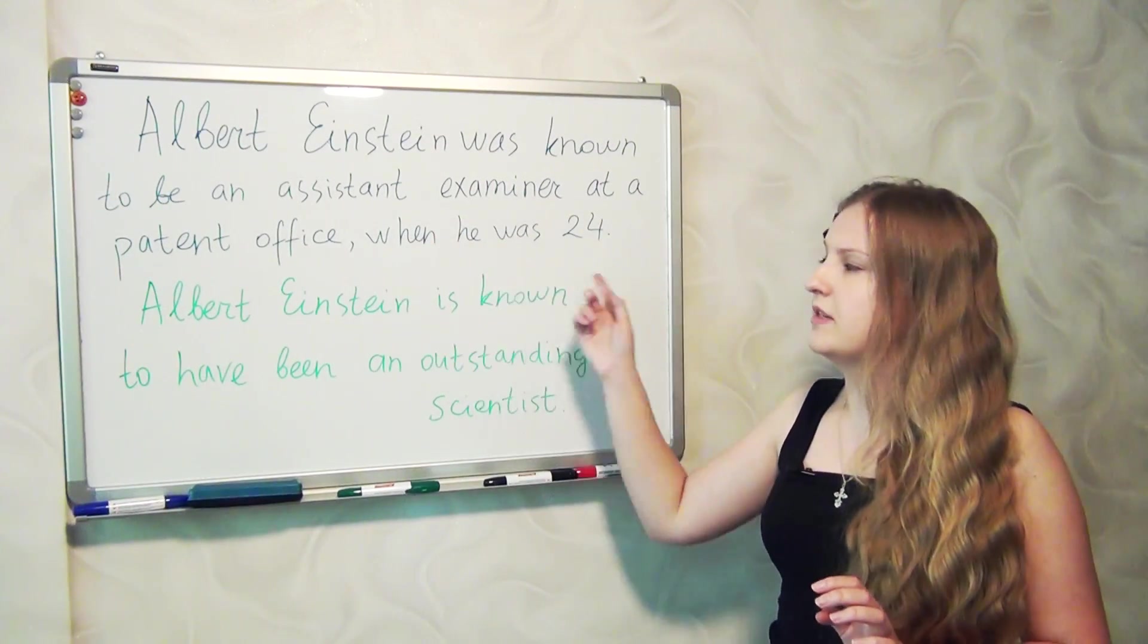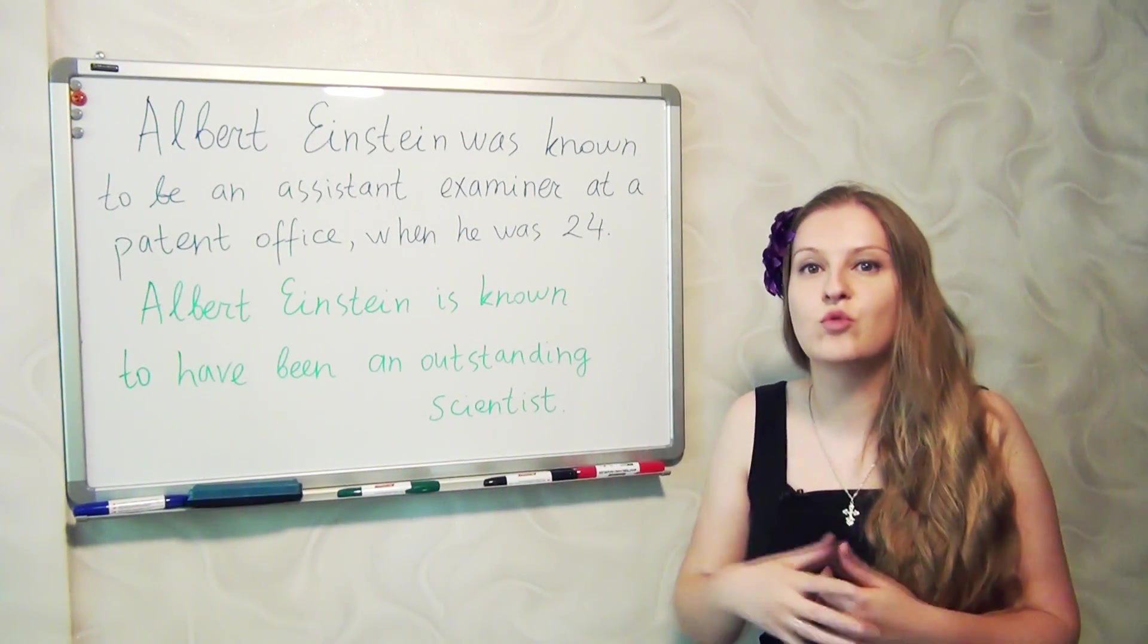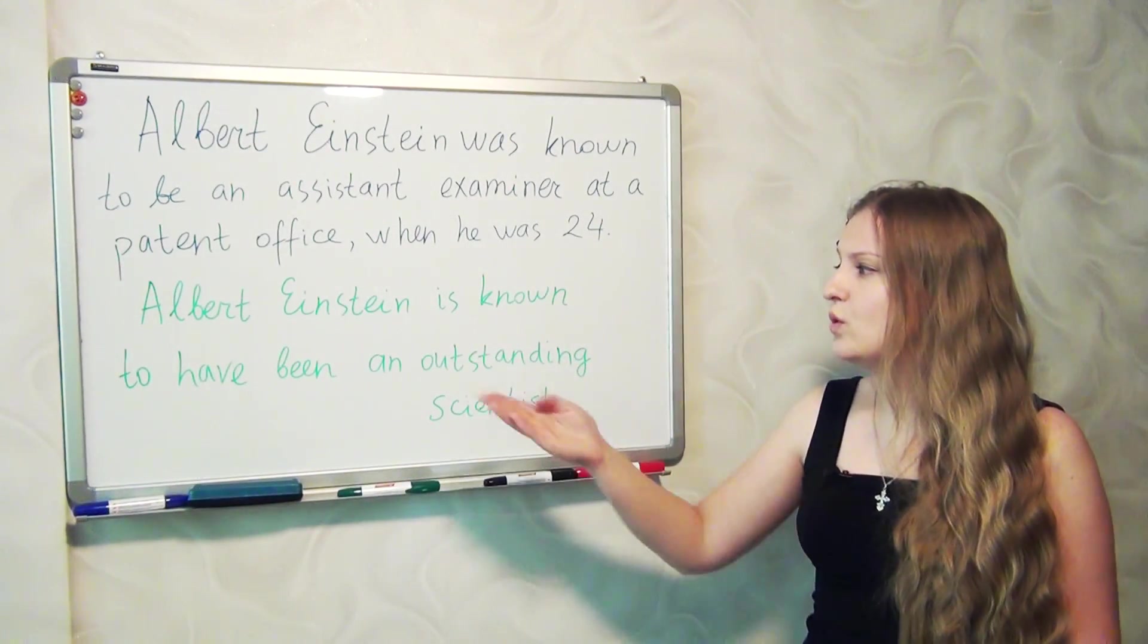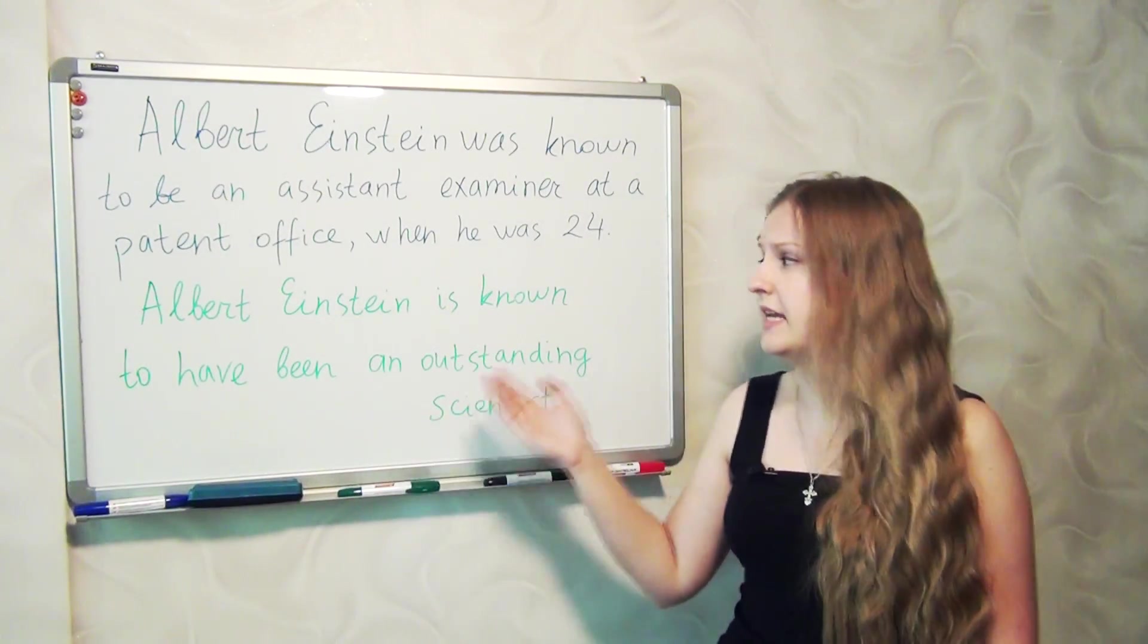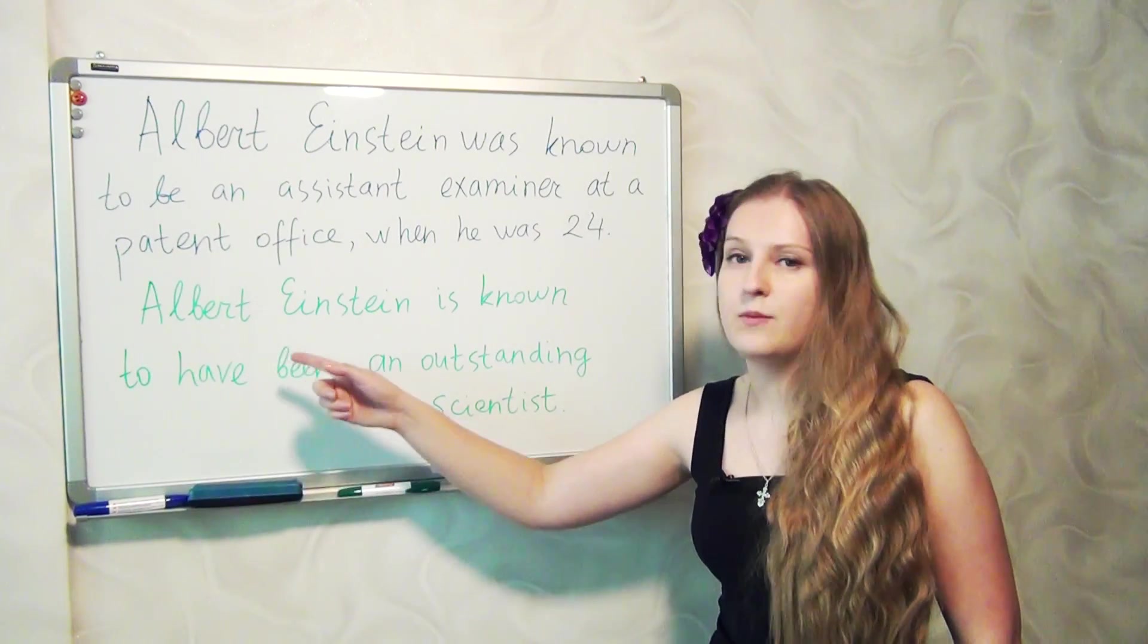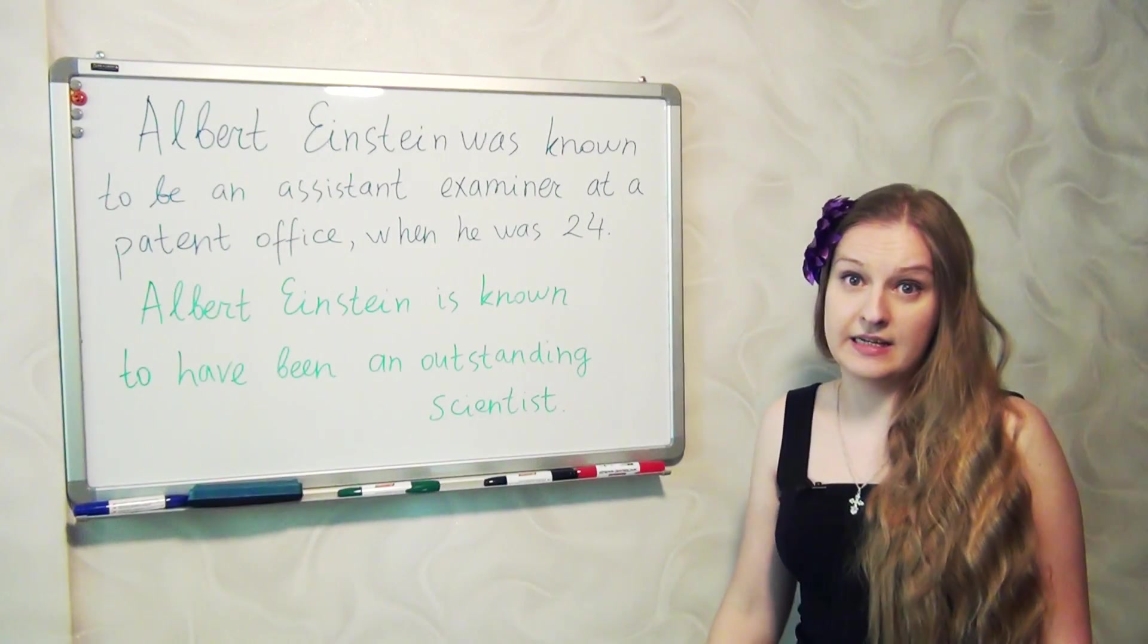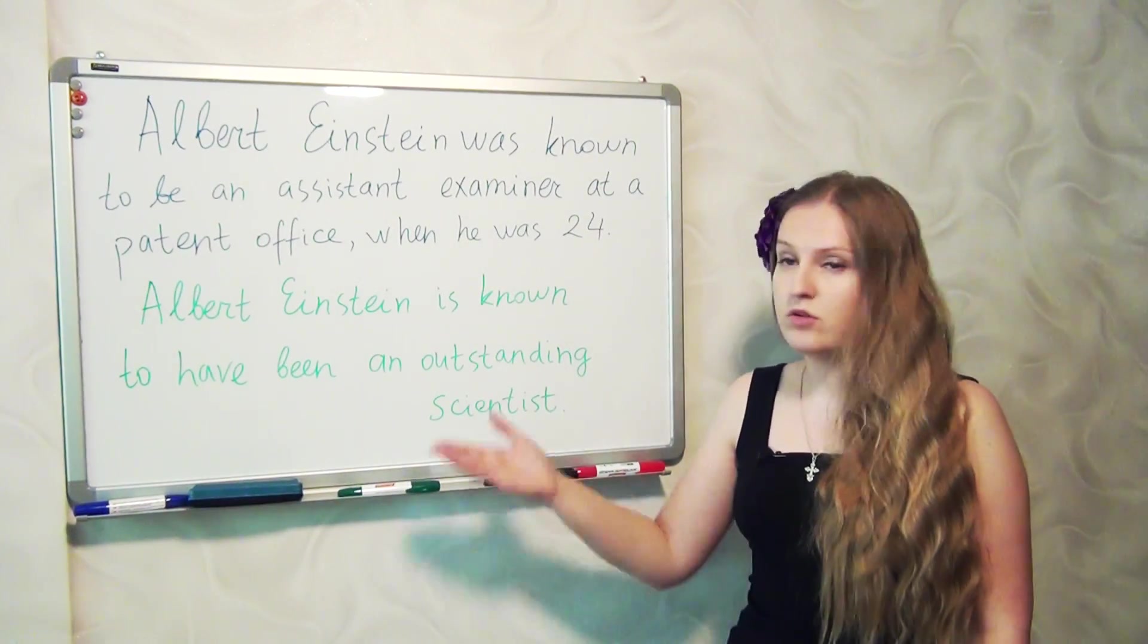By the way here there is an additional clause and here we use the tense we are supposed to according to the general rules of using different tenses. So we are talking about the past, that's why we use past simple. And the second sentence Albert Einstein is known to have been an outstanding scientist. So let's analyze the sentence once again. The first part is connected with present and the second one with the past because we use a perfect infinitive have been. That's why he is known now, so now people know that he was an outstanding scientist before. Because now unfortunately he is not alive, so he's no longer alive. So two examples.